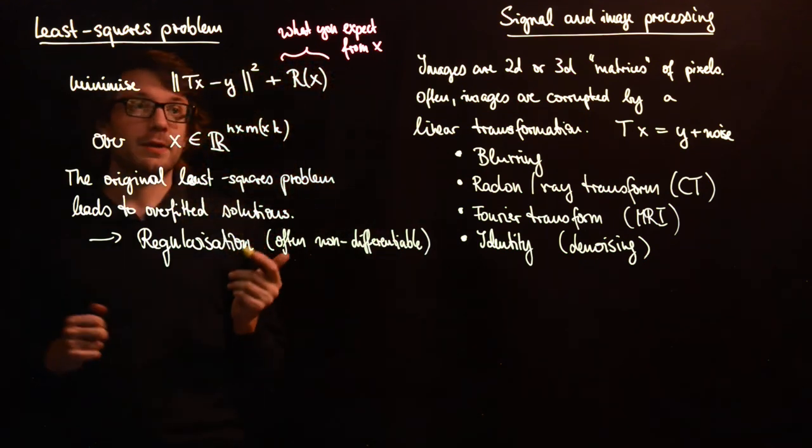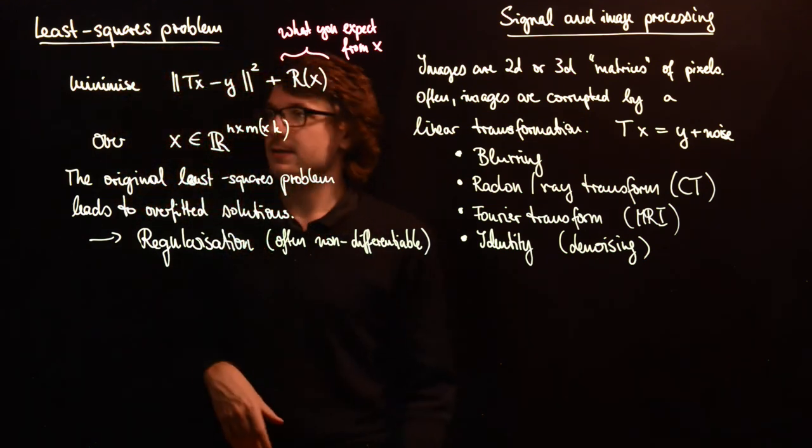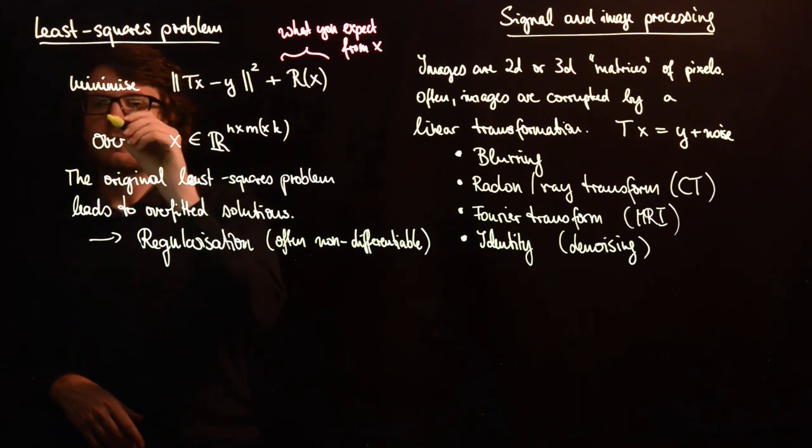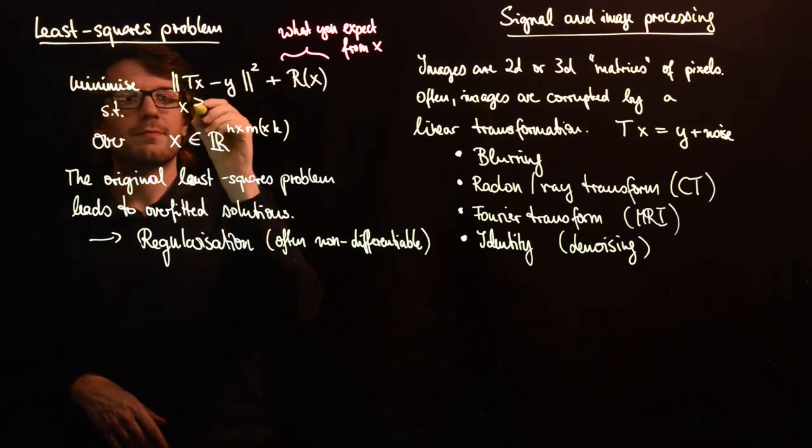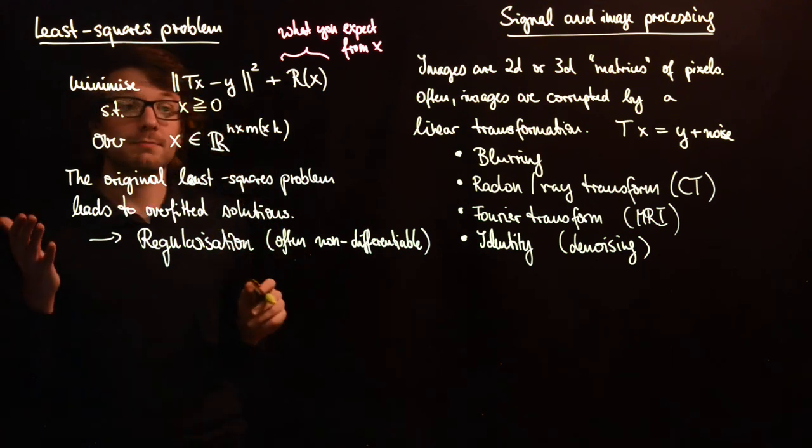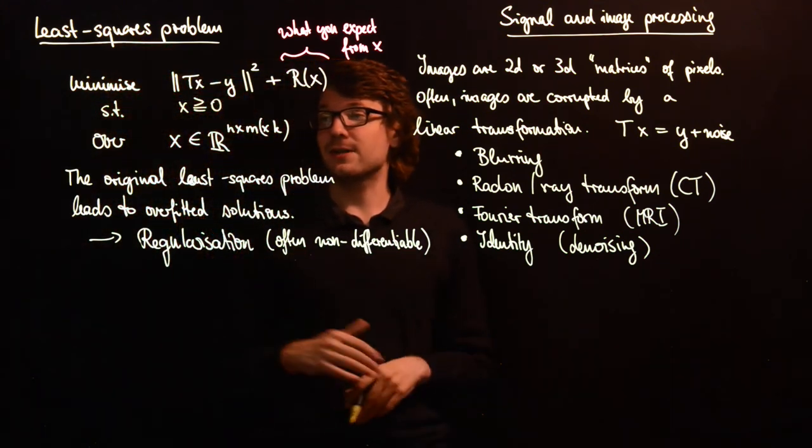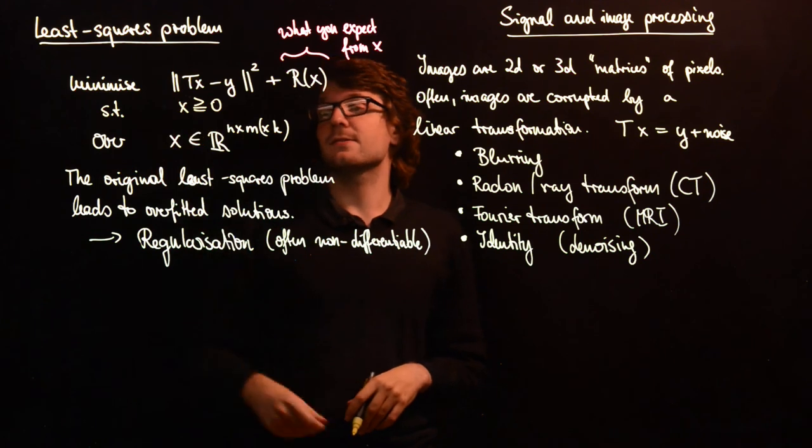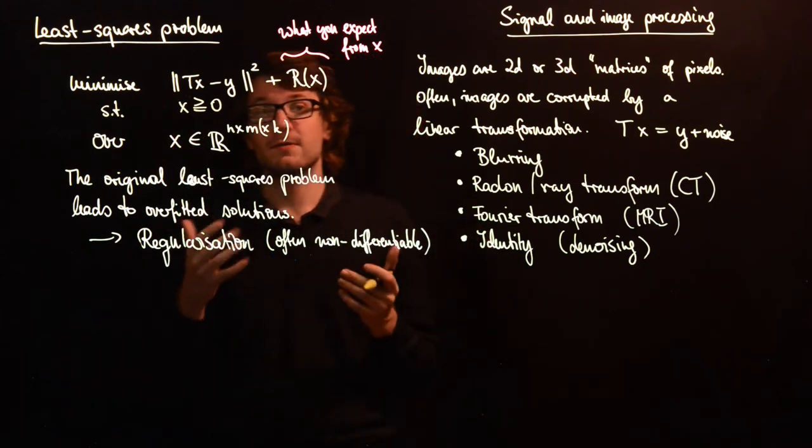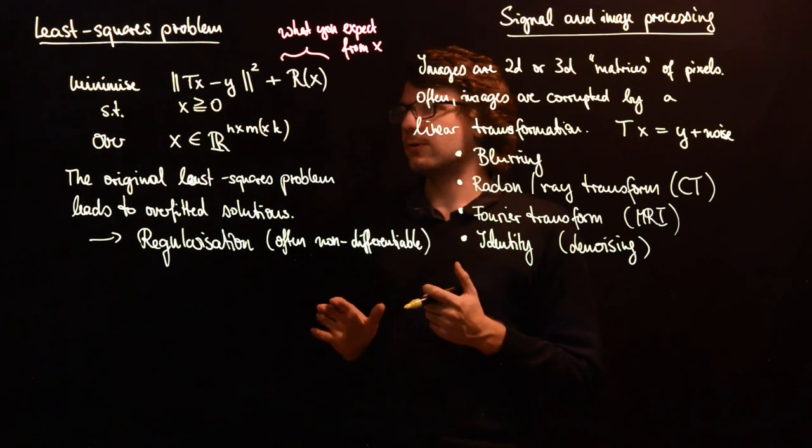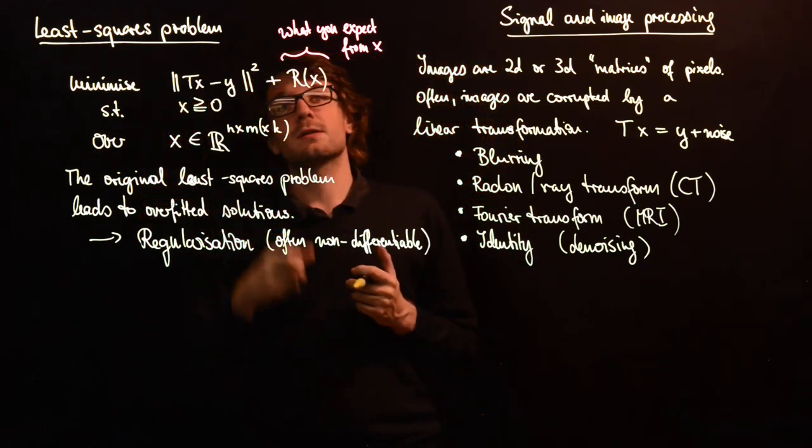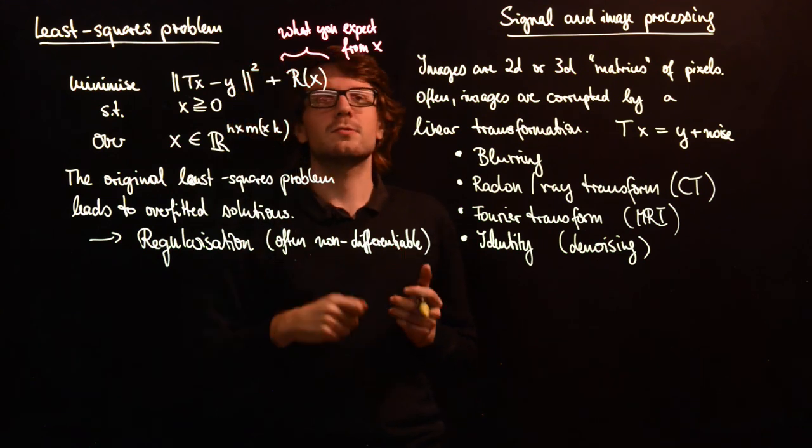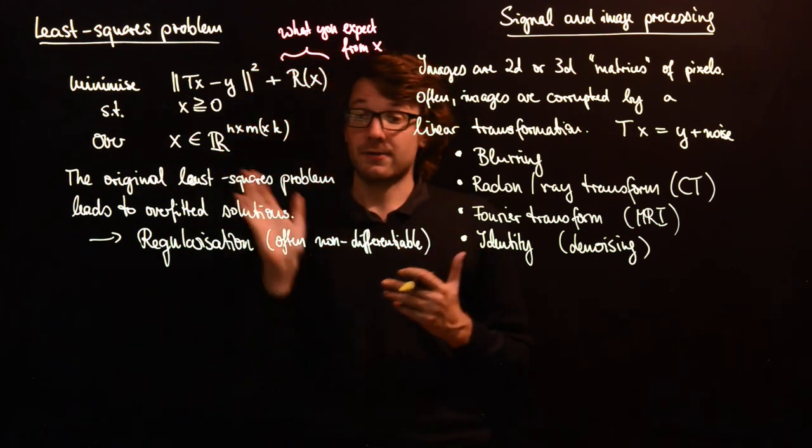Another very trivial thing to add is sometimes you have the condition that the quantity you're measuring is always greater or equal than zero. Then you can add this as a constraint and this will also be a convex constraint, so this will not ruin your problem. It will just insert additional information and you can also count this as what you expect from x.